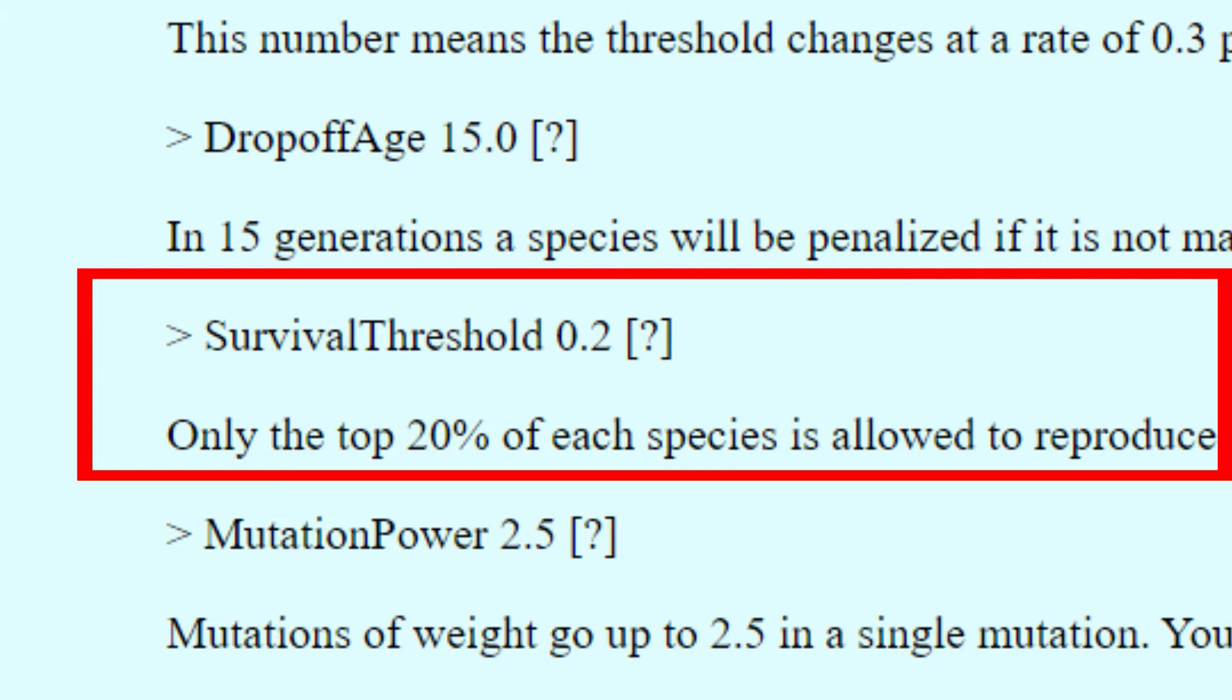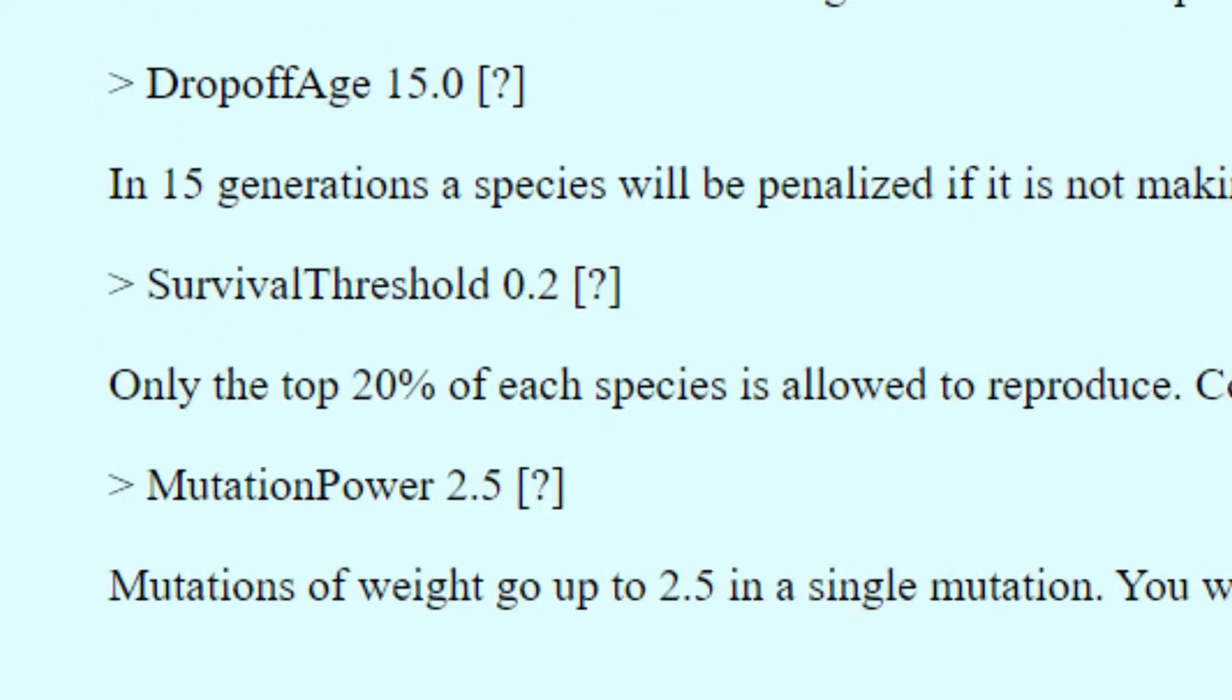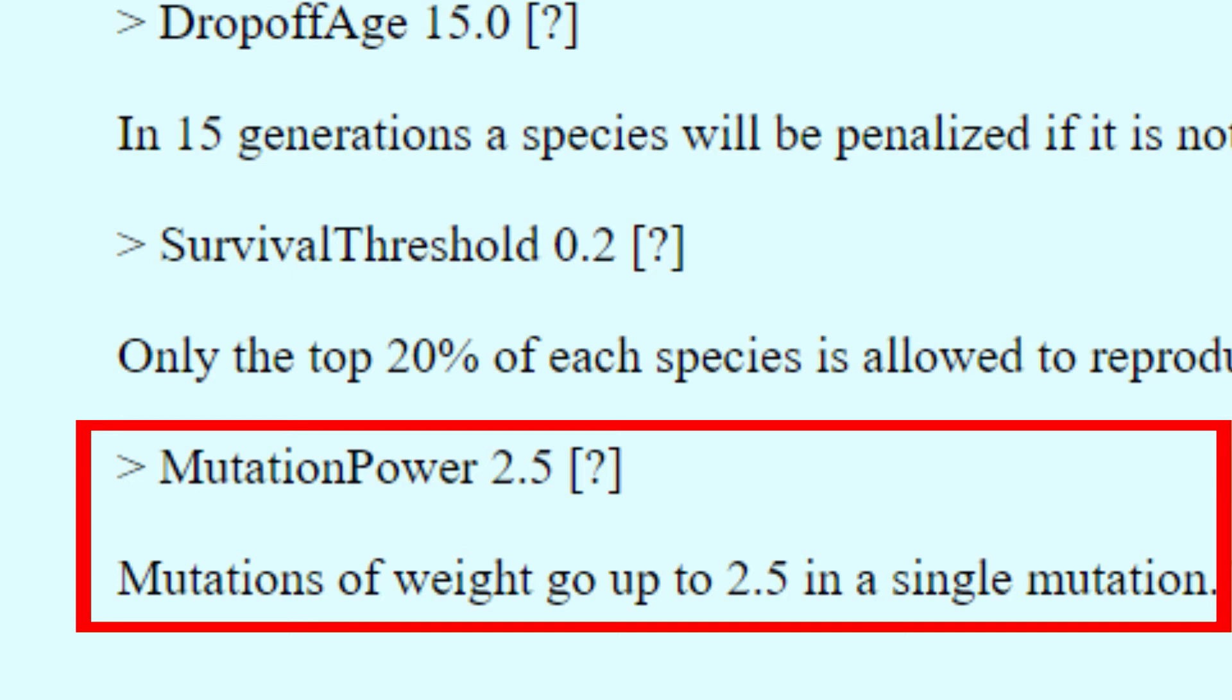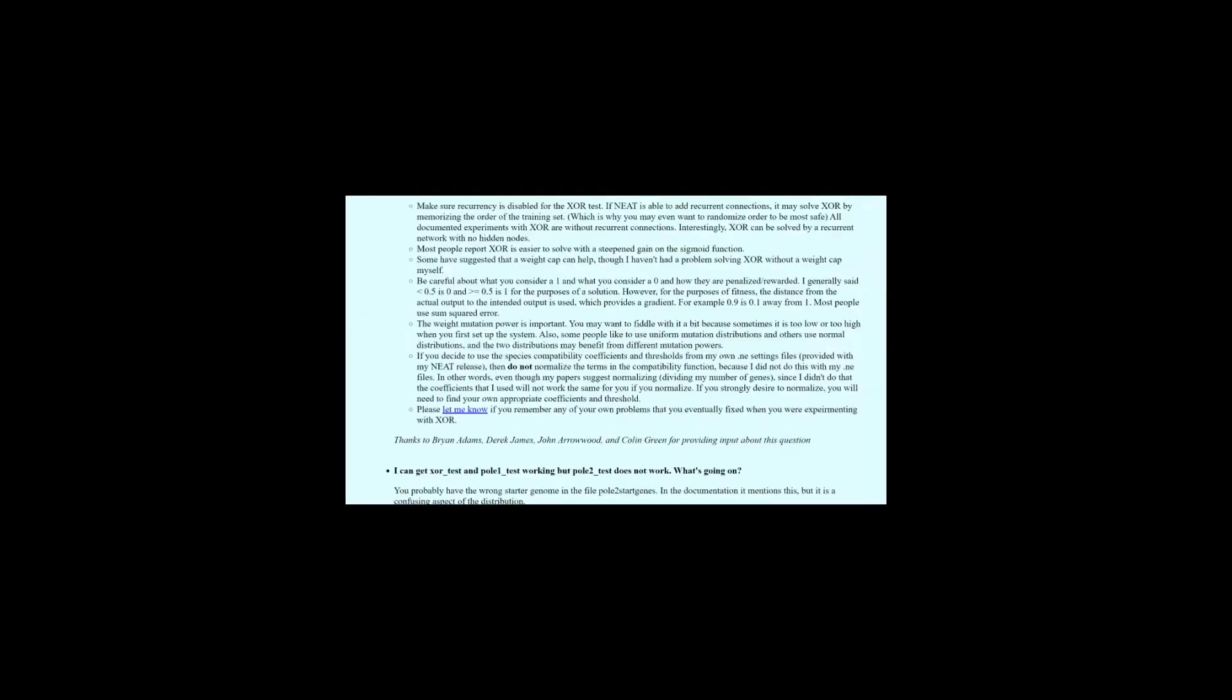And then there's the weight mutation factor. Ken limits this to a factor of 2.5 and recommends that it never goes over 5. And then I discovered that Ken was playing fast and loose with definitions of 0 and 1.